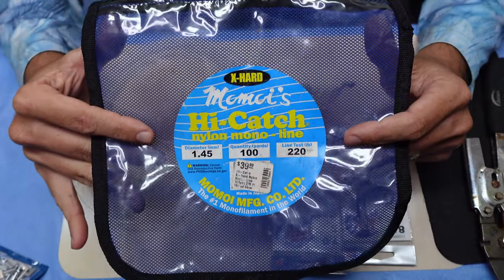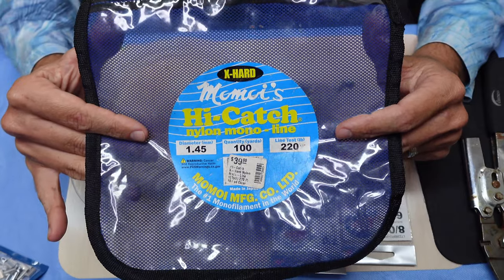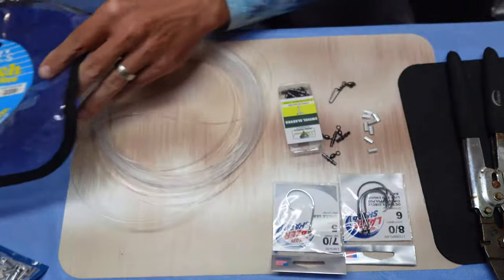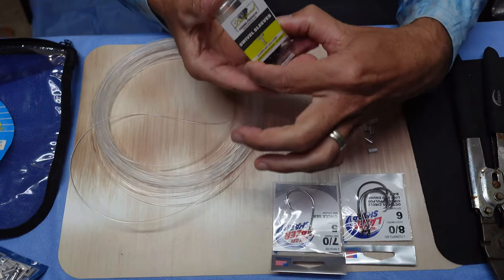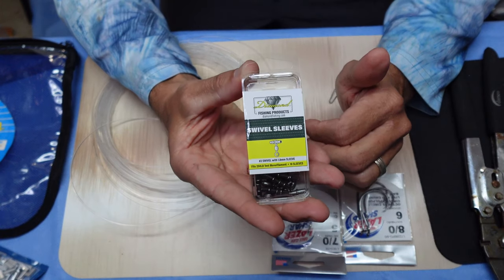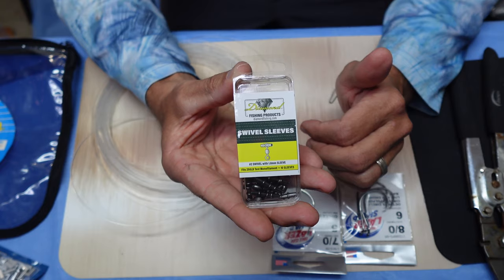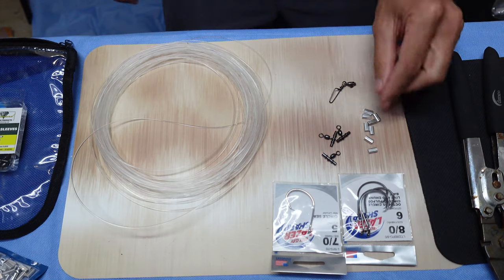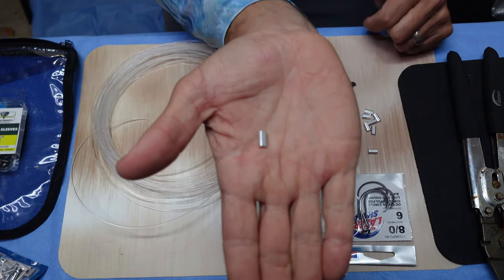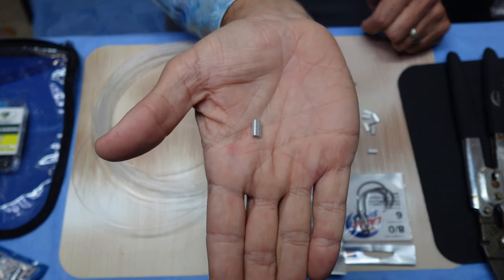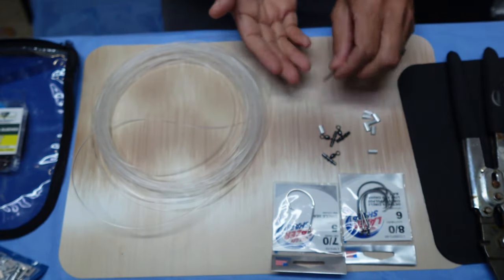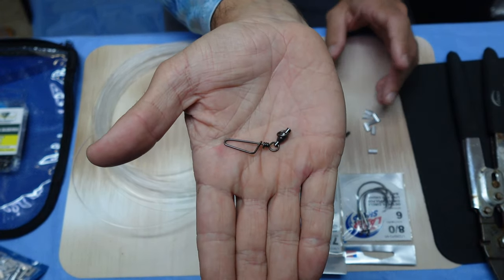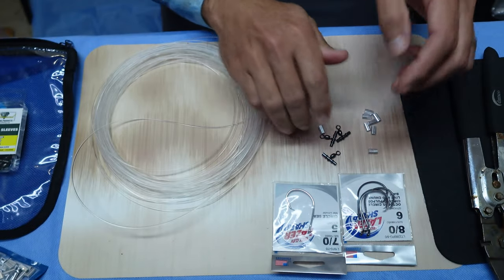All right, first thing you're going to need for this rig is your leader. This is a Momoi extra hard 220 pound. Second thing you need is your swivel sleeves. These are diamond swivel sleeves number two size. To me they're the best ones you can get. I'm going to need eight of these aluminum sleeves. Snap swivel for the bottom of your rig to attach your deep drop weight and then hooks.